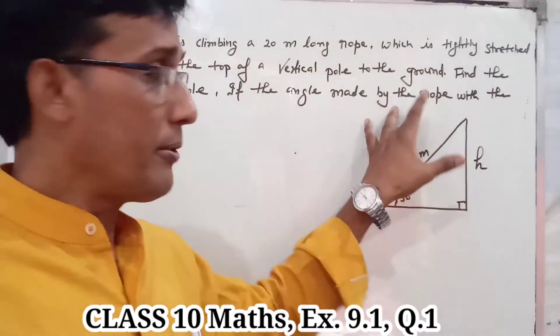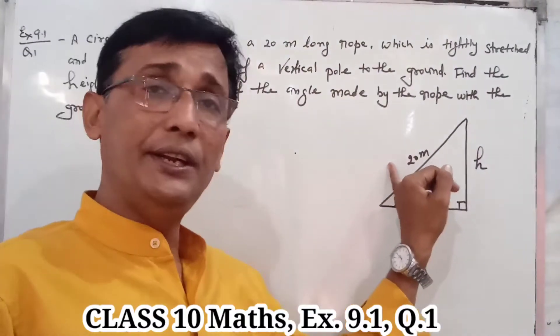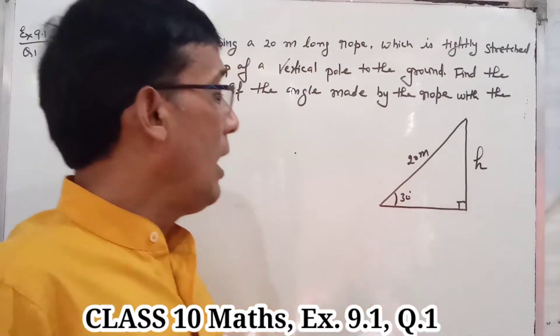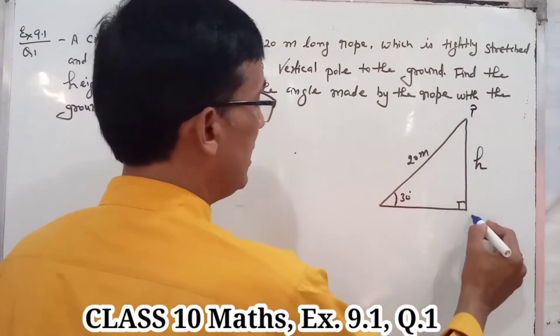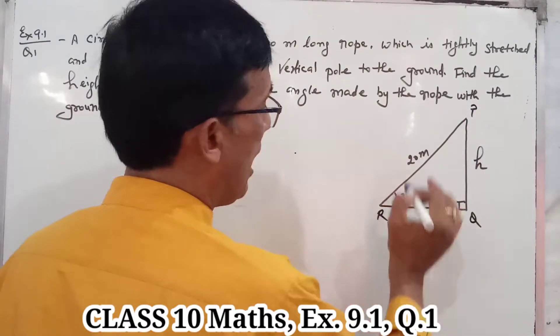Here is a figure in your book. This is 20 meters. This pole is called PQR.